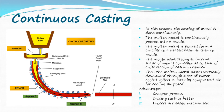Continuous casting: in this process the casting of metal is done continuously. The molten metal is continuously poured into a mold — from a crucible to a heated basin and then to the mold. The mold is usually long and the internal shape corresponds to the cross section of the casting required. The molten metal then passes vertically downward through a set of water-cooled rollers and is later cooled by compressed air.